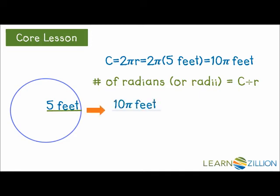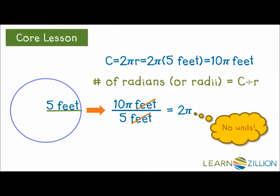In this case, we get 10 pi feet divided by 5 feet. Notice that the lengths are feet divided by feet. This is equivalent to 2 pi. No feet, no length, just the number of radii in the circle.